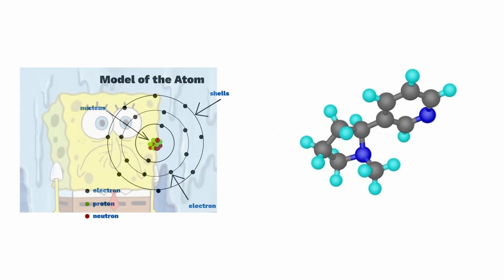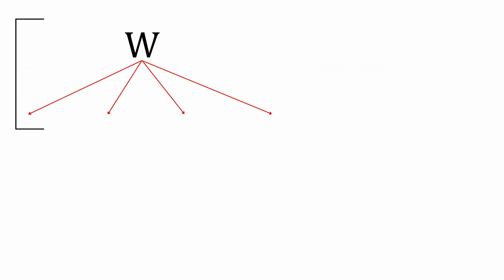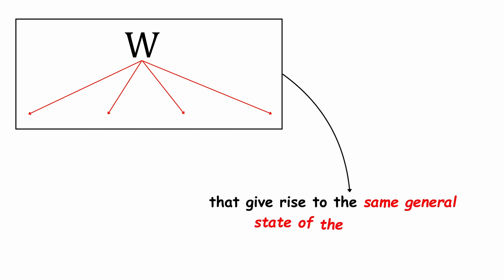That is, w represents the number of different ways in which the internal parts of a system, such as atoms or molecules, can be organized, without any difference being noticeable from the outside. In other words, they are all the possible combinations that give rise to the same general state of the system.